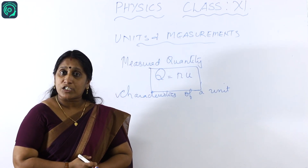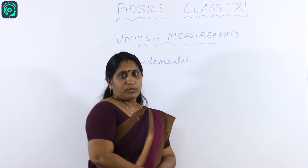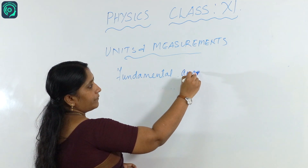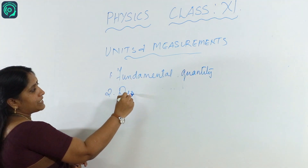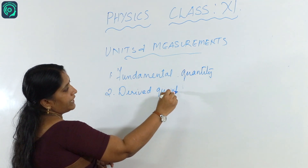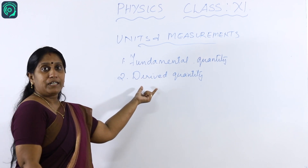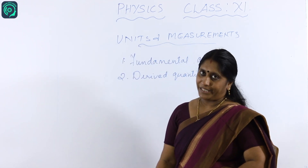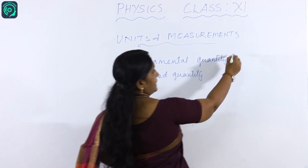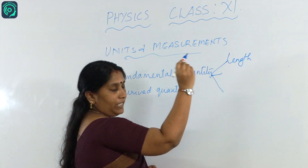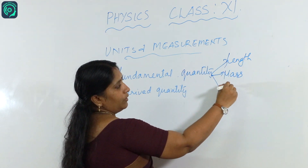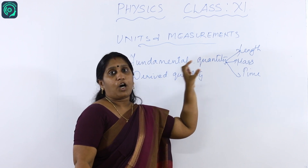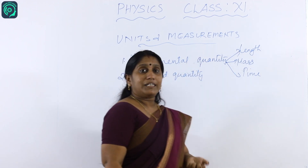Now we shall discuss the two types of quantities in physics. One is fundamental quantity and the second one is derived quantity. In mechanics, we have three fundamental quantities: the first is length, the second is mass, and the third is time.